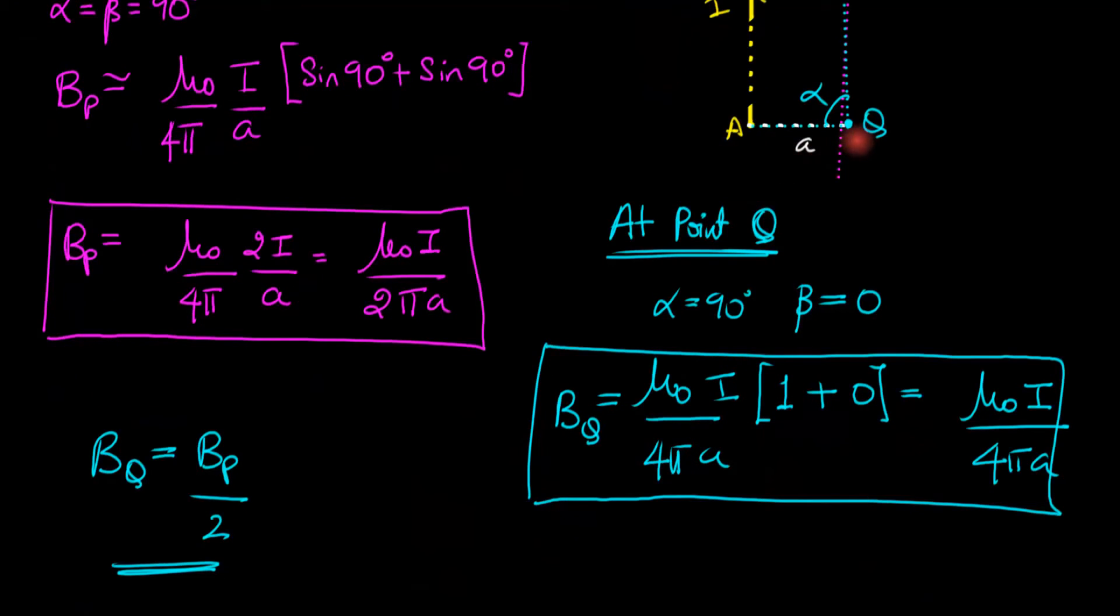And if you were to go even further down, you can convince yourself that the magnetic field becomes even weaker. When I say further down, I mean go along the length of the wire. Don't change the value of A - the perpendicular distance from the wire remains the same.